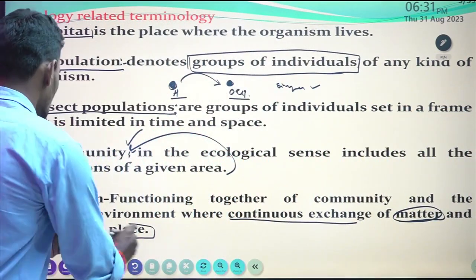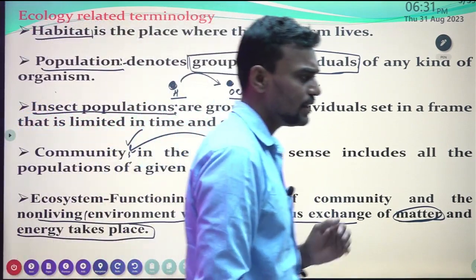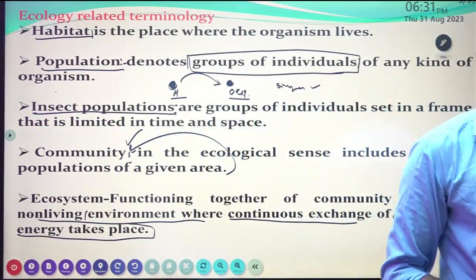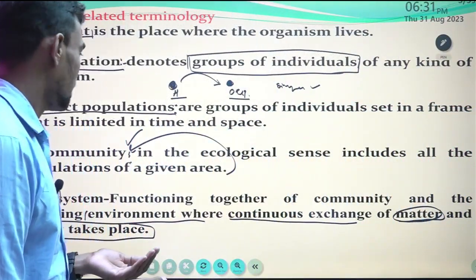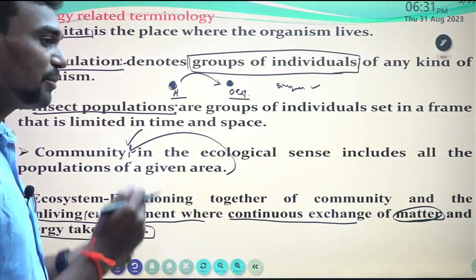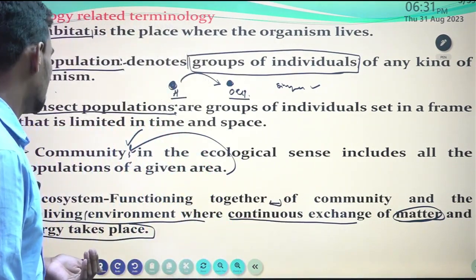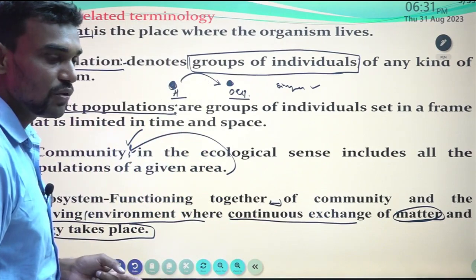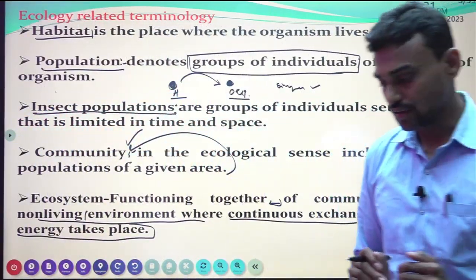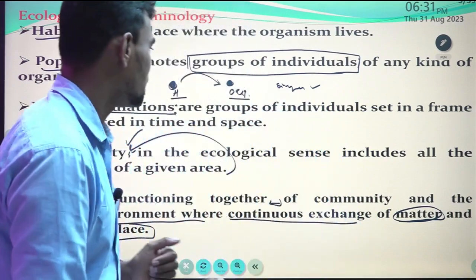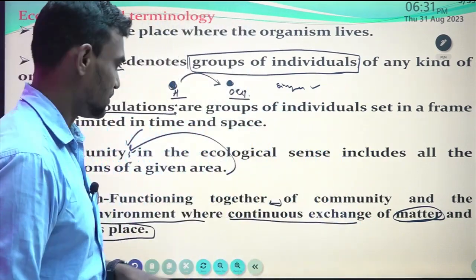The non-living environment includes abiotic and biotic factors. These factors, having together in a community, means having together the exchange of matter and energy — in terms of community and the non-living environment. This is called the ecosystem simply.